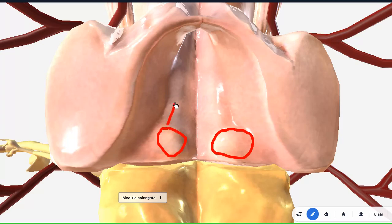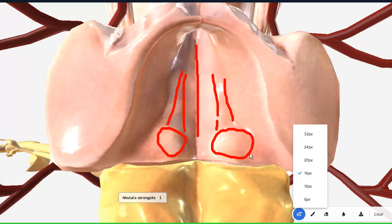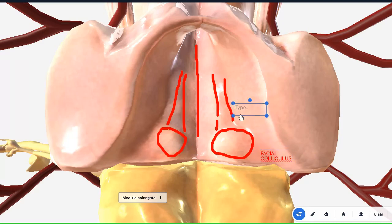From the facial colliculus, as we go upwards, here we have the median eminence. This is an elevation, the median eminence. And obviously, the thing in the center will be termed as the median sulcus. Let's label them here for your clarity. The facial colliculus, the median eminence, and the median sulcus.